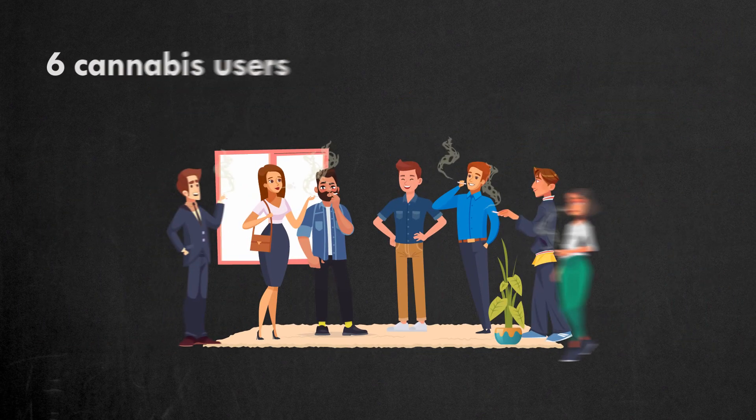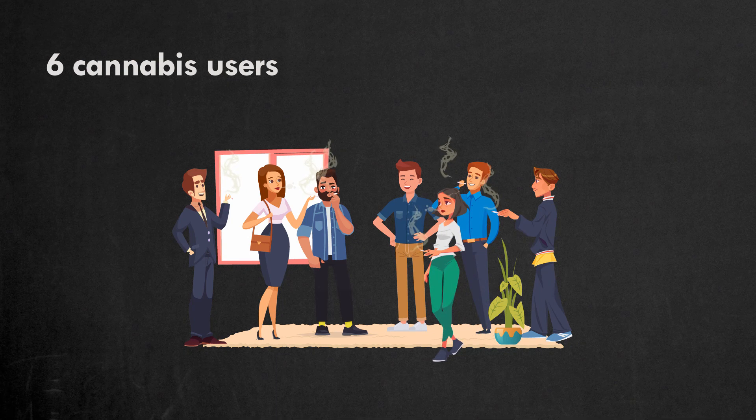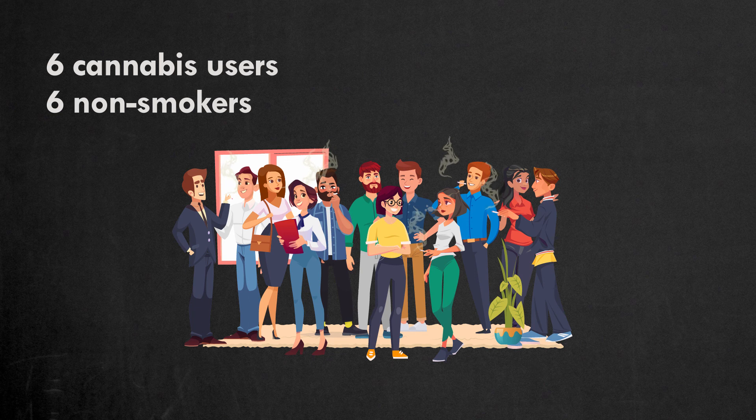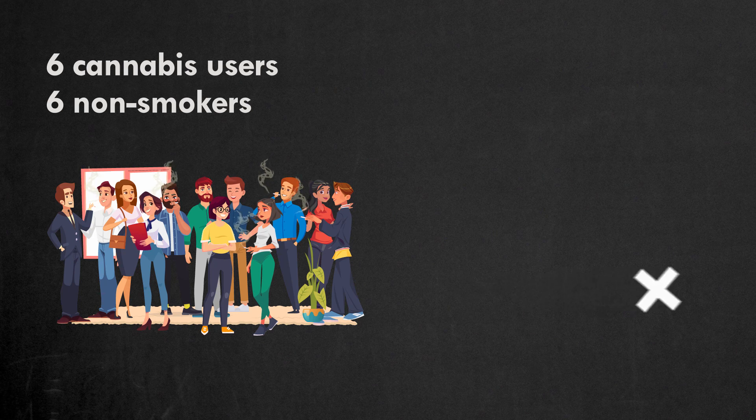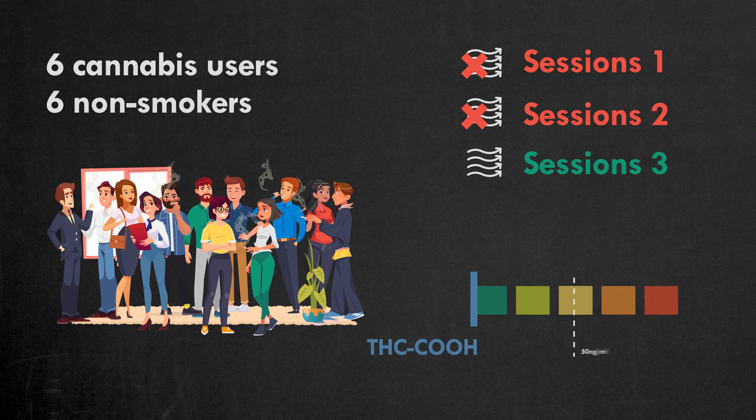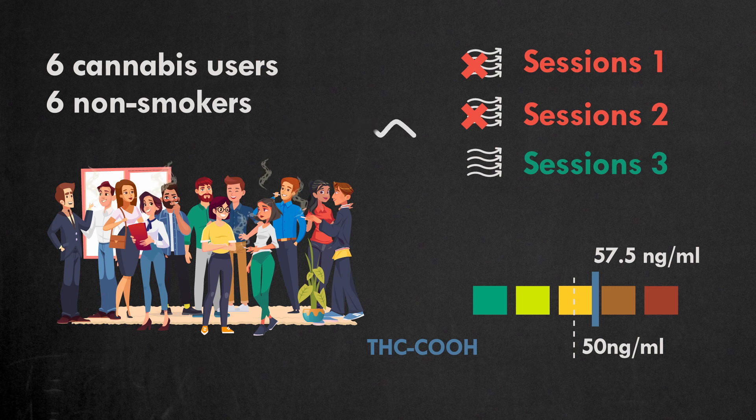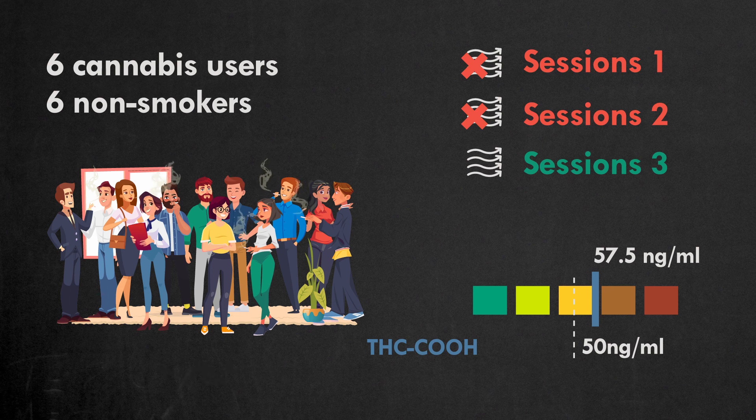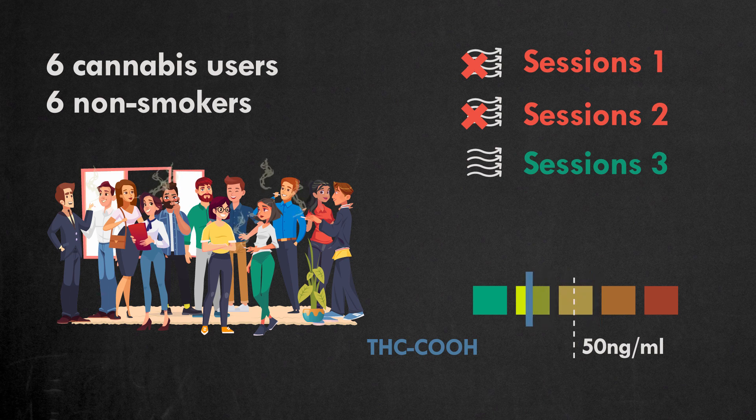In one study, six cannabis users smoked cannabis cigarettes in a room. Six non-smokers were seated in an alternating manner with the six cannabis smokers. In total, there were three sessions of this study. Sessions one and two were conducted with no ventilation, but in session three ventilation was employed. Maximum THC COOH concentrations for non-smokers was 57.5 ng per ml. THC COOH concentrations generally increased with THC potency, however room ventilation substantially reduced exposure levels.